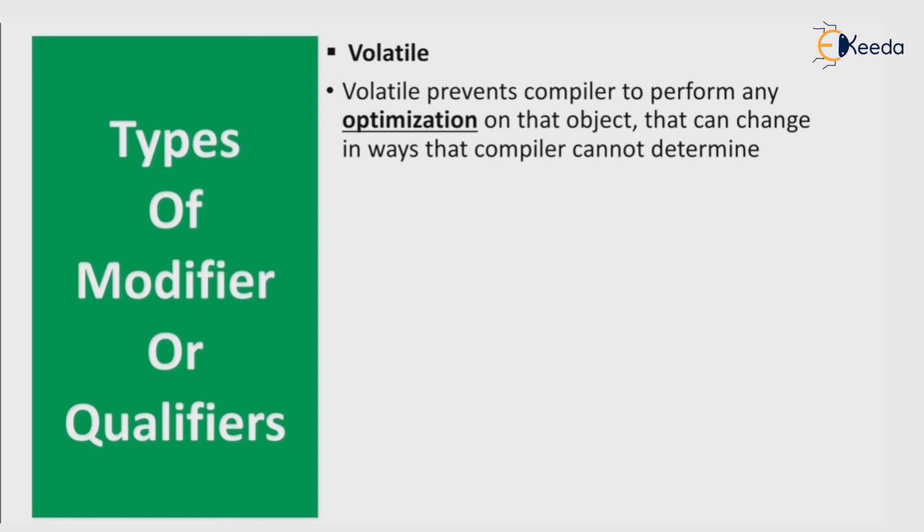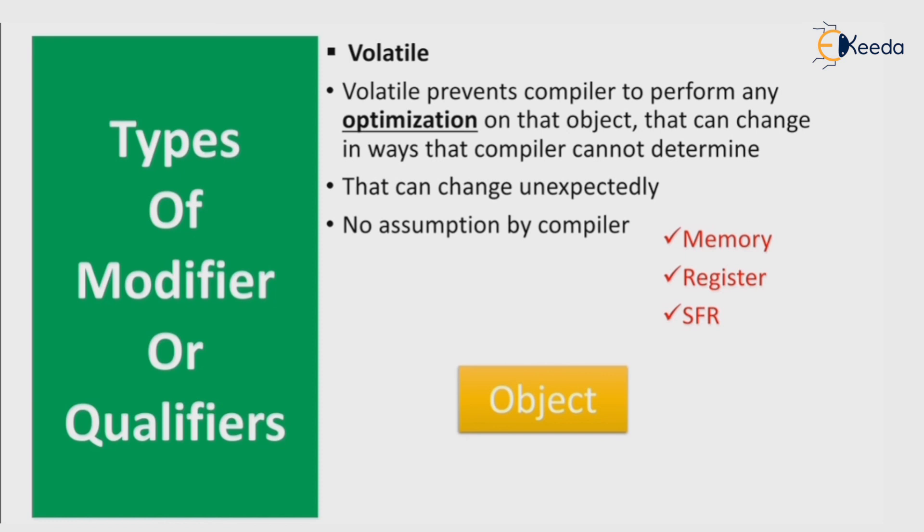The last type of modifier or qualifier is volatile. Volatile prevents the compiler from performing any optimization on that object that can change in ways the compiler cannot determine, that can change unexpectedly. No assumptions by compiler. An object which may be a memory location, register, or SFR can be changed by interrupts, direct memory access, external inputs, or shared resources.